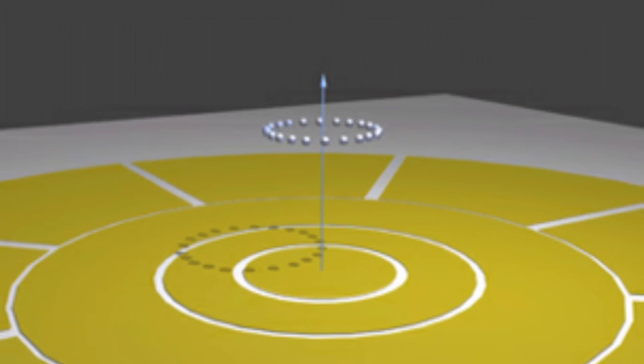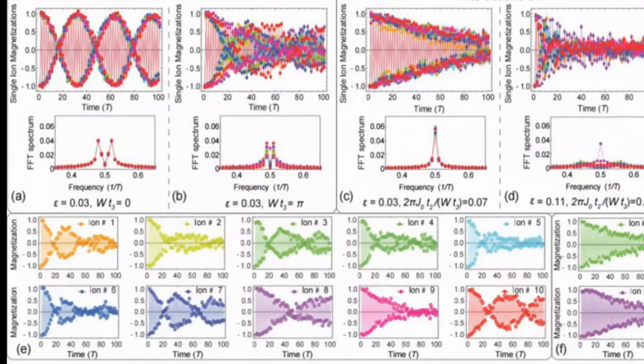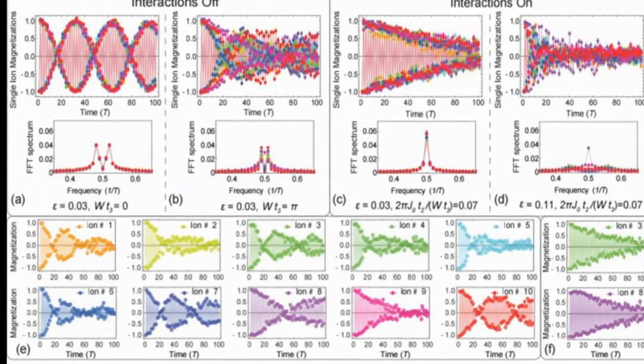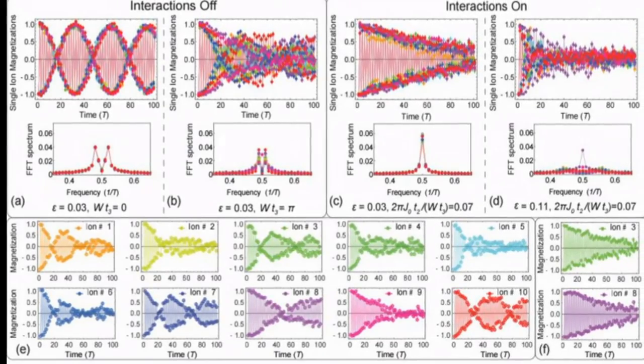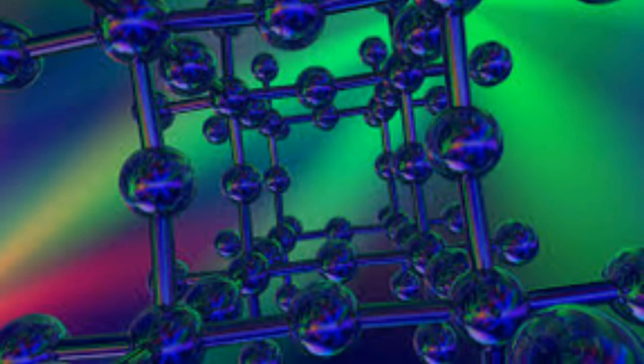Of course it would never be possible to extract energy from this motion, that would violate the conservation of energy. But the temporal symmetry breaking would manifest itself in this repeating motion in time, just as spatial symmetry breaking manifests itself as repeating patterns in space.